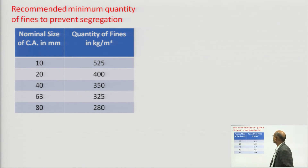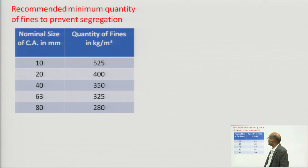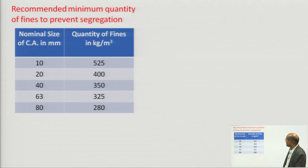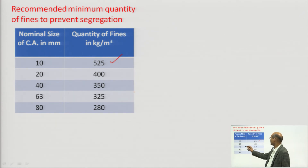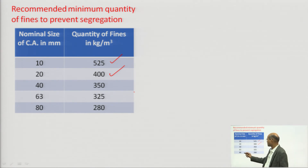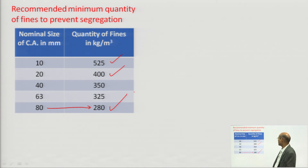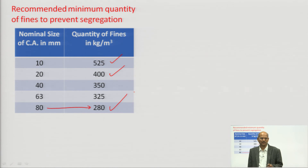If the amount of fines in the concrete mix is less, there is also a chance of segregation. The recommended minimum quantity of fines to prevent segregation depends on nominal aggregate size: for 10 mm aggregate, 525 kg per cubic meter; for 20 mm aggregate, 400 kg per cubic meter; and for 80 mm aggregate, 280 kg per cubic meter. These recommendations should be followed during mix design.